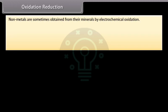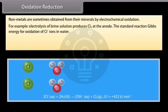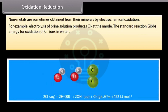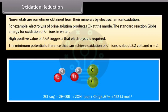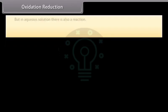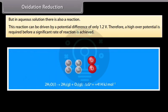Oxidation reduction. Non-metals are sometimes obtained from their minerals by electrochemical oxidation. For example, electrolysis of brine solution produces Cl2 at the anode. The standard reaction gives energy for oxidation of Cl- ions in water. High positive value suggests that electrolysis is required. The minimum potential difference that can achieve oxidation of Cl- ions is about 2.2 volt and N is equal to 2. But in aqueous solution there is also a reaction. This reaction can be driven by a potential difference of only 1.2 volt. Therefore, a high overall potential is required before a significant rate of reaction is achieved.